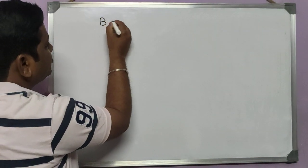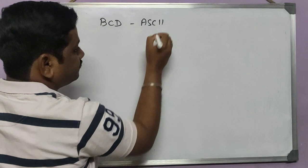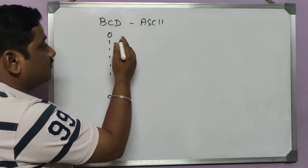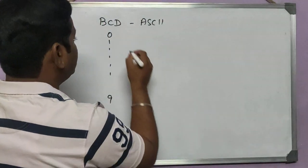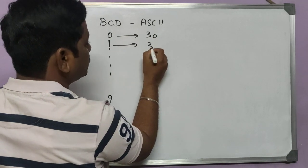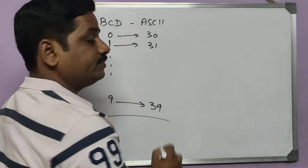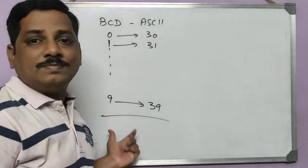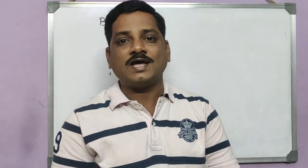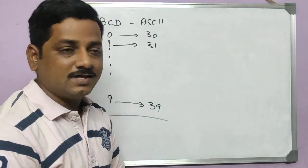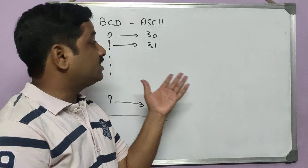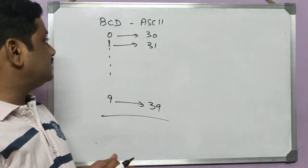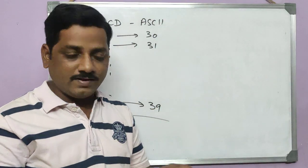In BCD to ASCII conversion, we have input as BCD numbers and we need to get the ASCII code. BCD numbers, as we all know, range from 0 to 9. If the number is 0, its ASCII code is 30H; if it is 1, it is 31H; if it is 9, it is 39H. So we just need to add 30H to the BCD input. That is the simple logic. In XR to ASCII we also had A to F requiring a different addition, but here that risk is not there — just add 30H.